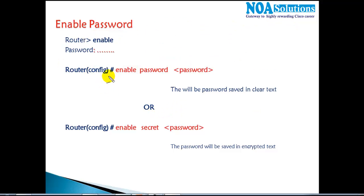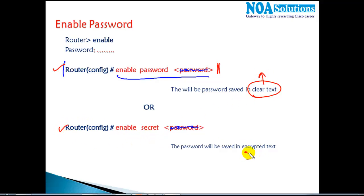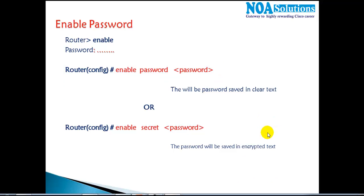To make that possible, we have two commands: either 'enable password' followed by any password, or 'enable secret' followed by any password. The key difference is that 'enable password' stores the password in clear text inside the running configuration, whereas 'enable secret' stores the password in encrypted text.